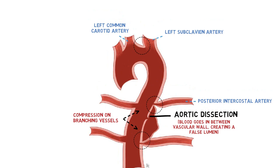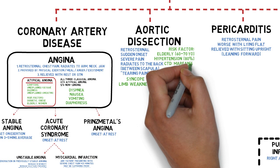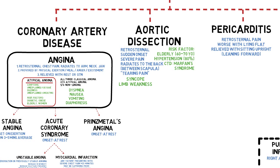Aortic dissection commonly occurs in the elderly. Hypertension is one of the most common associated risks, present in almost 80% of cases. In much younger patients, this can occur in those with connective tissue disease such as Marfan's syndrome, because their vascular walls are more fragile. However, these diseases may not be known to the patient if previously undiagnosed, so we may discover more during physical examination.